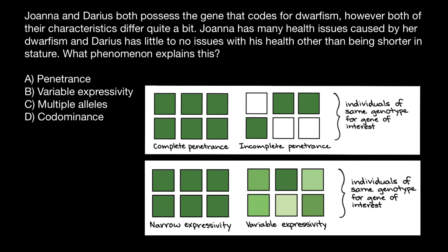Let's now return to our problem. Joanna has many health issues caused by her dwarfism, and Darius has little to no issues with his health other than being shorter in stature. This is an example of variable expressivity — Answer B.